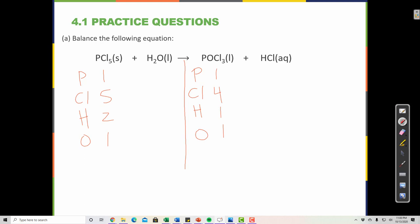so it doesn't really matter where you start except that if an element appears more than once on each side of the reaction, then you want to avoid starting there. So on the left, for example, chlorine appears here and here. So that means we don't want to start with chlorine.